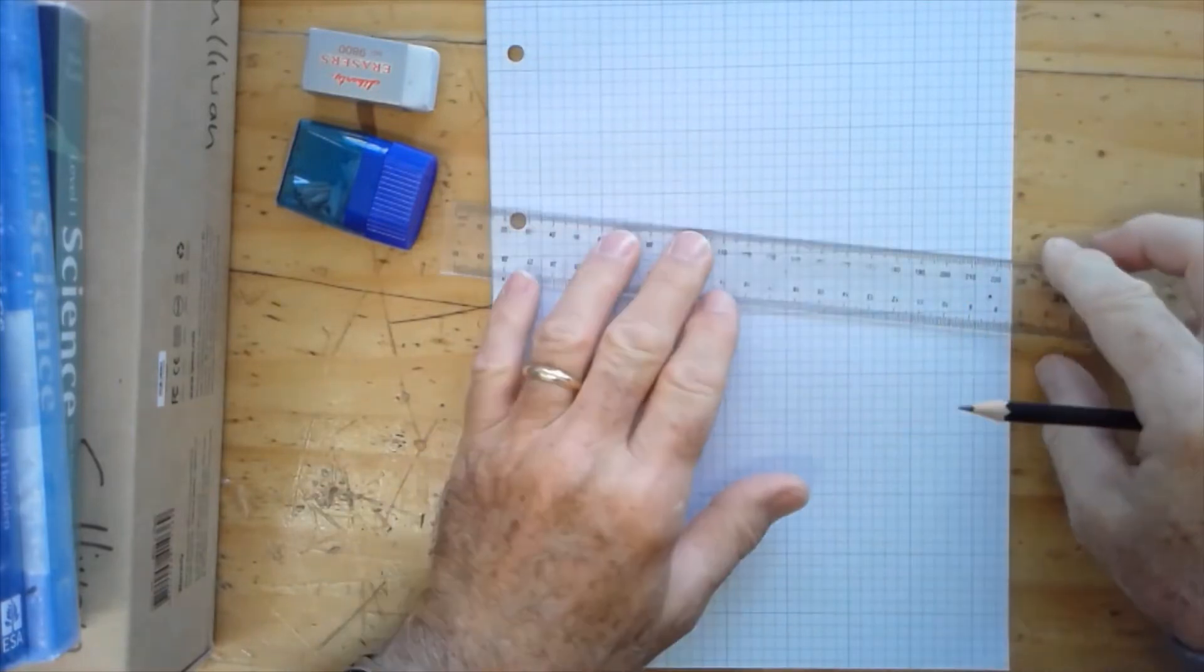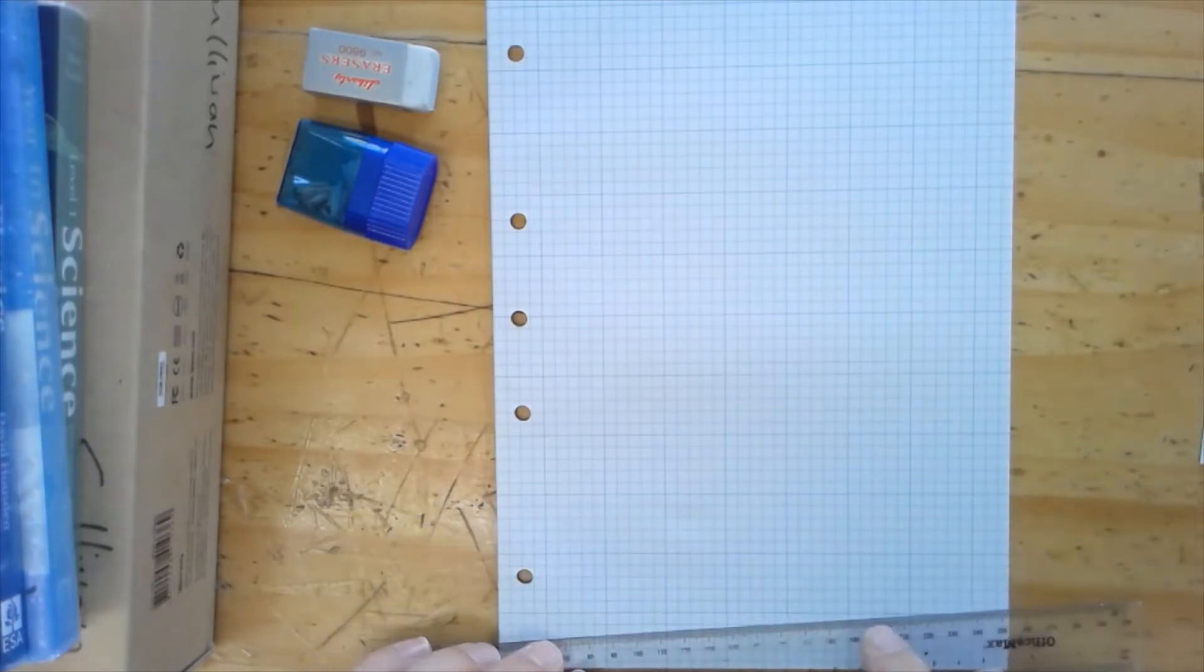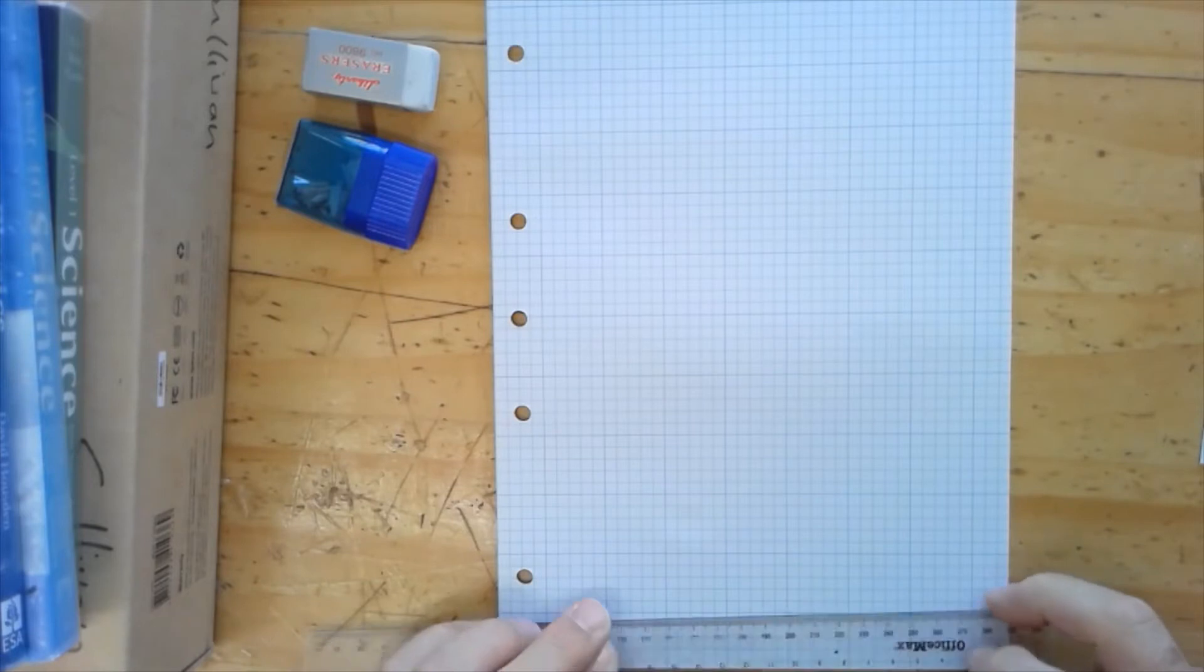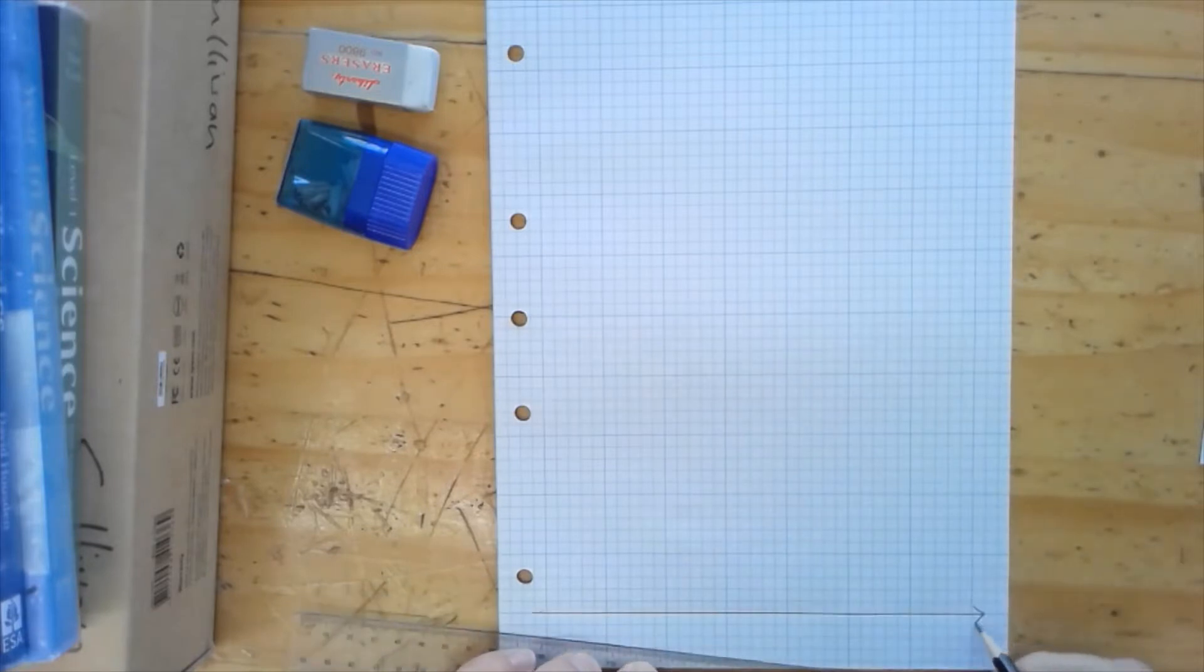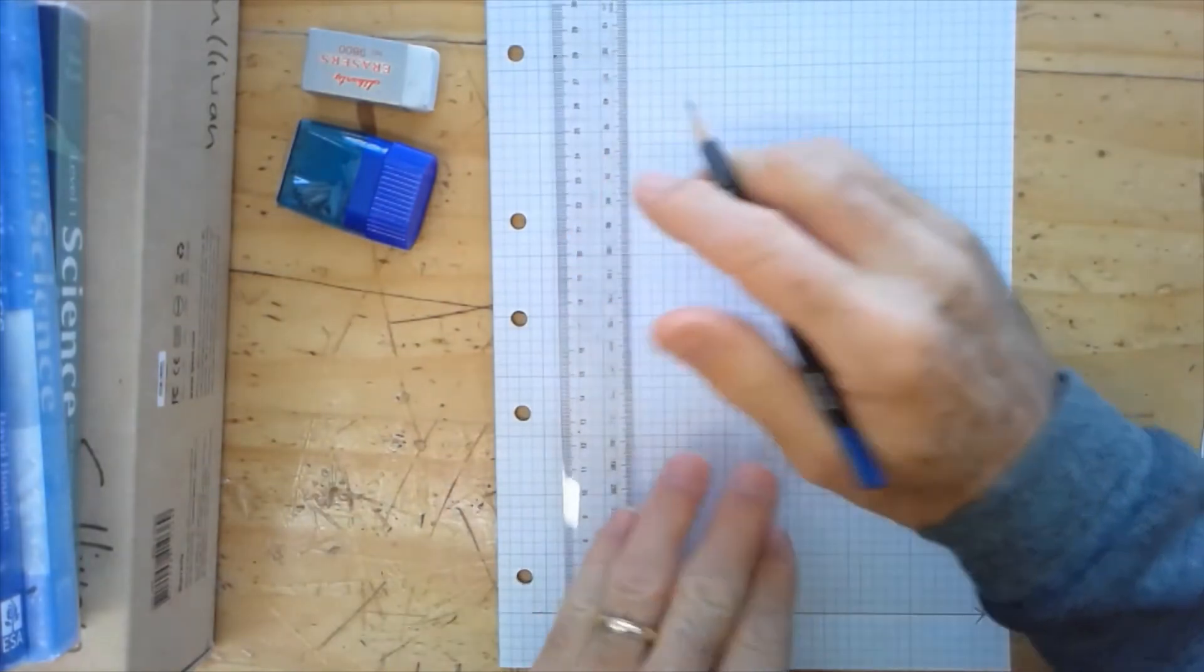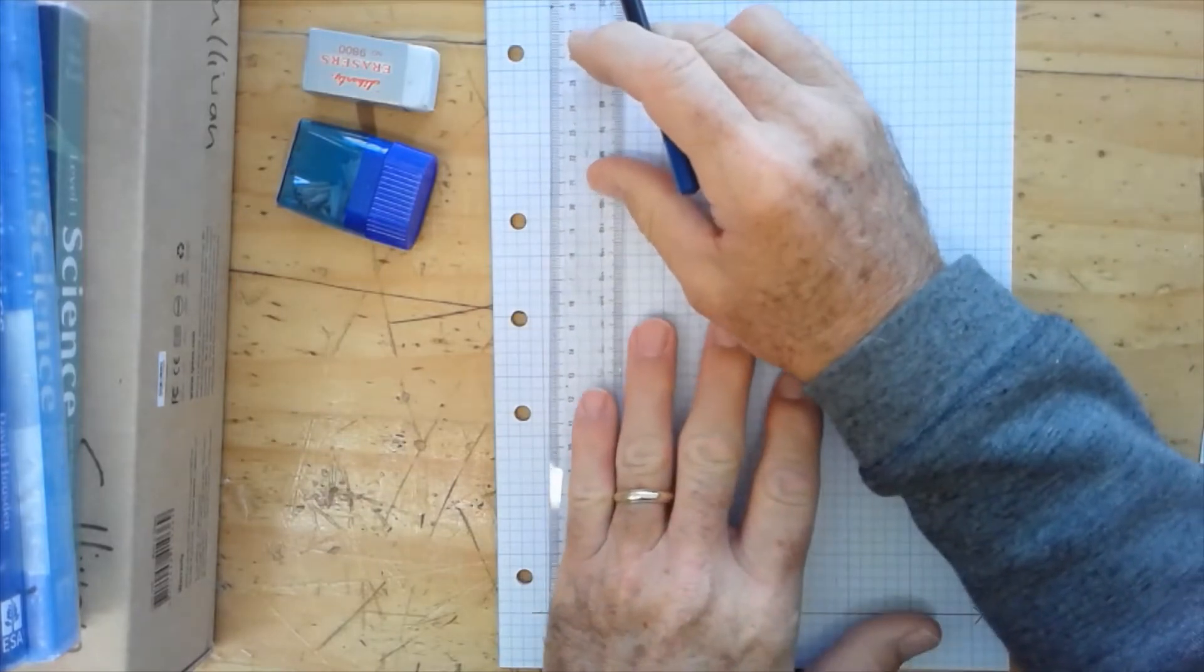So first thing, our axes we're going to draw on these bold blue lines. You see every fifth line is bold, and we're going to draw it on the bold line nearest the bottom edge. So here is our x-axis, which is going to be the independent variable, and our dependent variable on the y-axis. Again, we're going to draw on the bold blue line nearest the edge of this page.